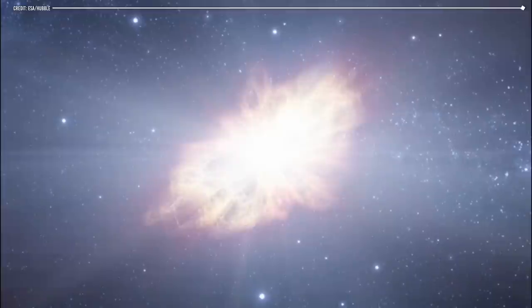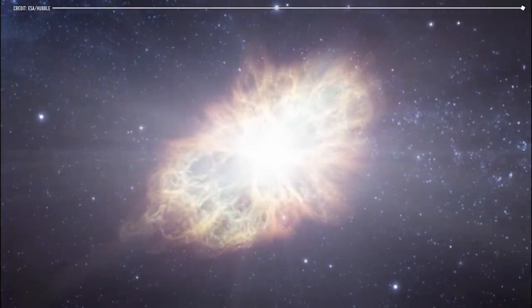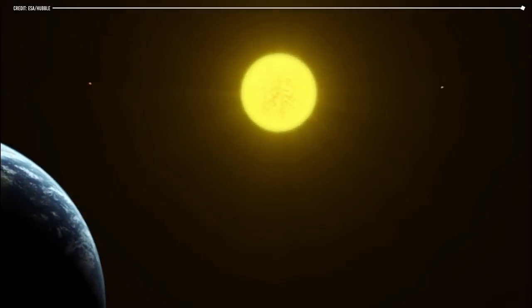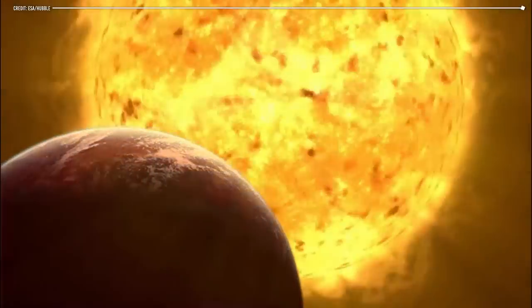Stars are mostly made up of empty space, and when two stars collide, the chances of the planets around them being destroyed are low. It is likely that the orbits of the planets in both systems would be disturbed, but it is unlikely that any planets would be destroyed.